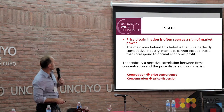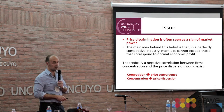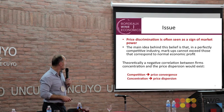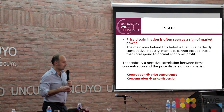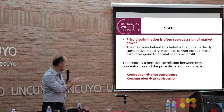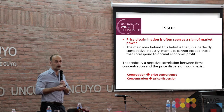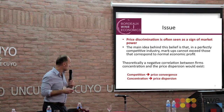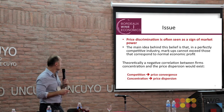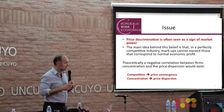The question of price discrimination is often seen as a sign of market power. Theoretically, there is a relationship between competition and price convergence. Competition implies price convergence — that's the main theoretical link we can expect between competition and price conversion — and then concentration implies price dispersion. That's the traditional view in theory.